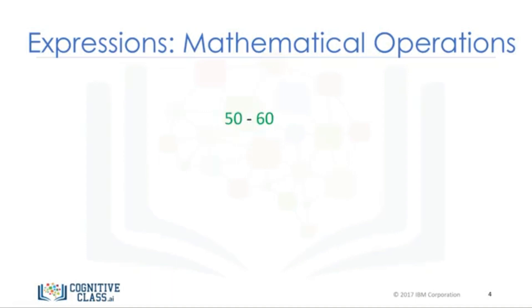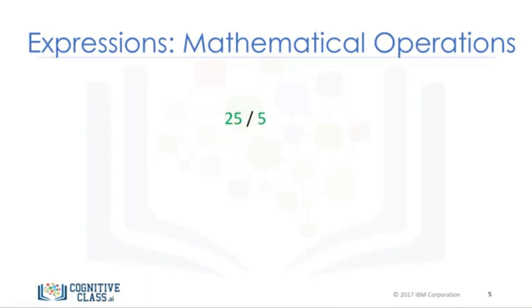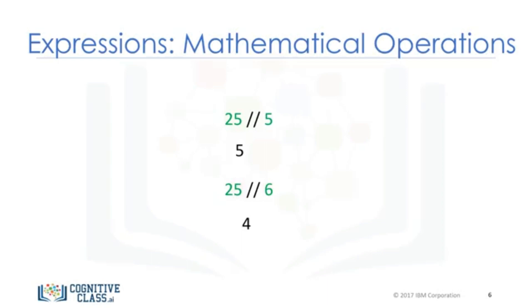We can perform multiplication operations using the asterisk. The result is 25. In this case, the operands are given by negative and asterisk. We can also perform division with the forward slash. 25 divided by 5 is 5. 25 divided by 6 is approximately 4.167. In Python 3, the version we will be using in this course, both will result in a float. We can use the double slash for integer division, where the result is rounded. Be aware, in some cases, the results are not the same as regular division.